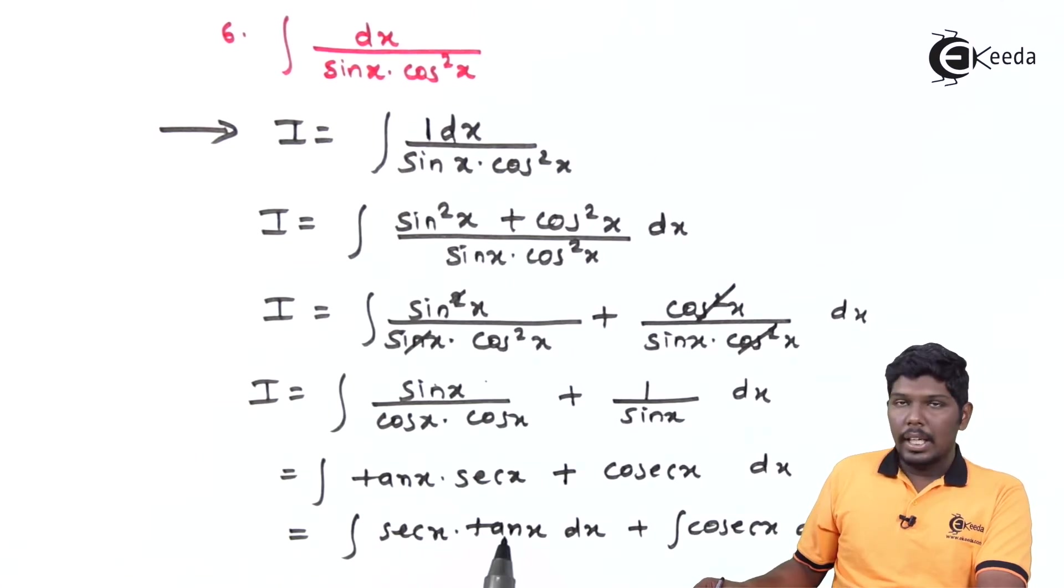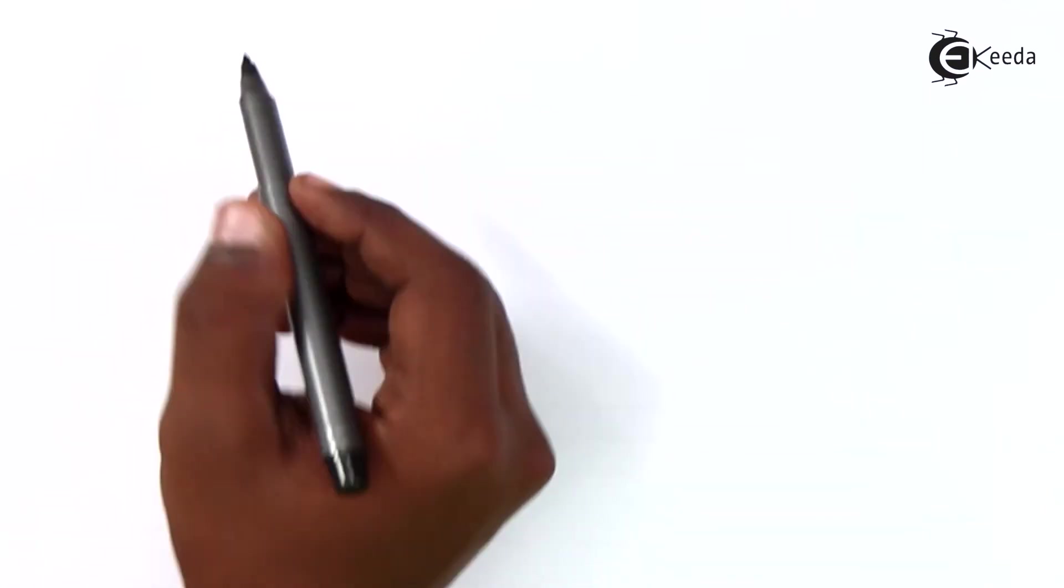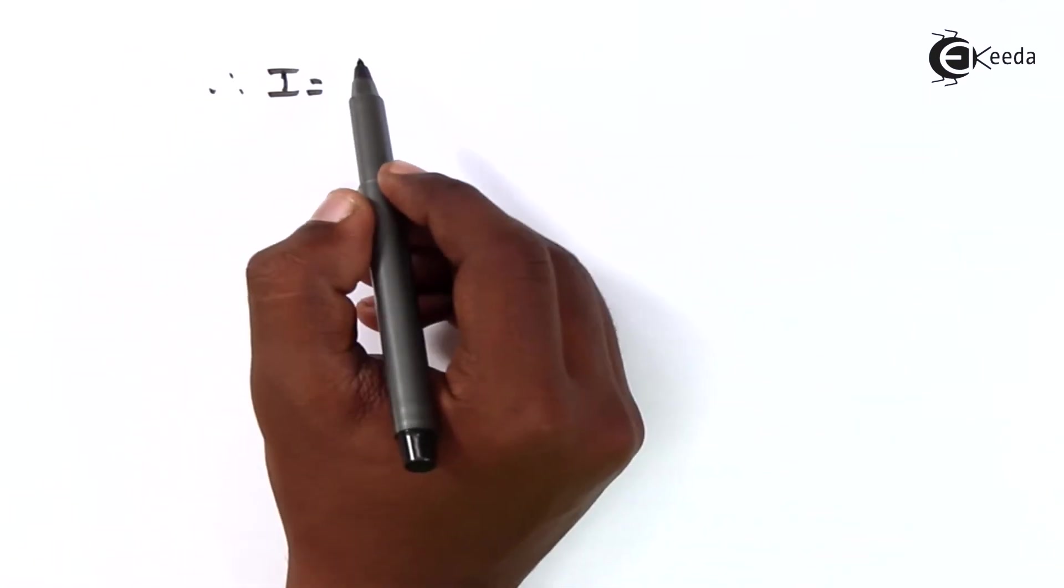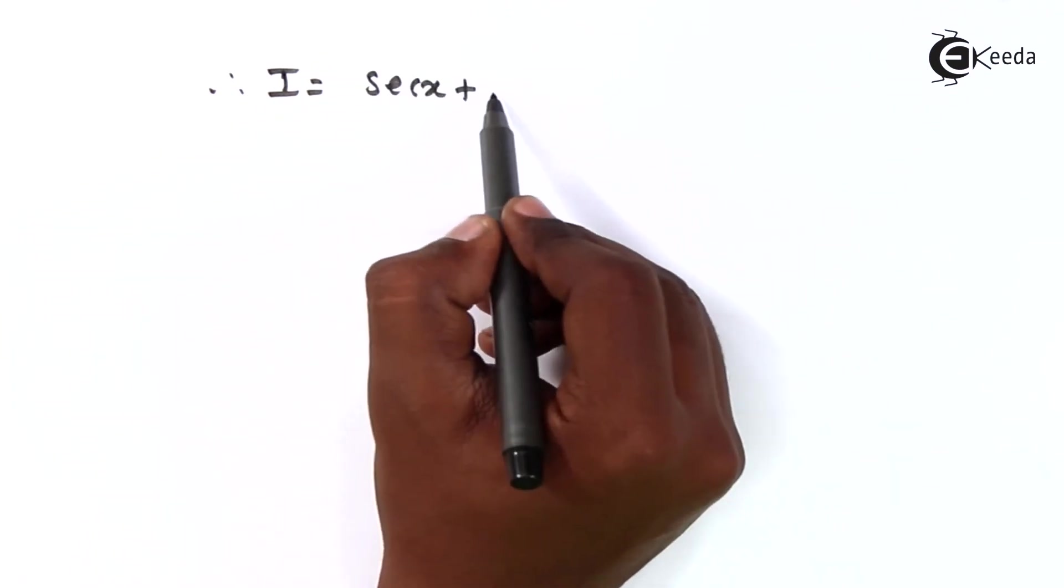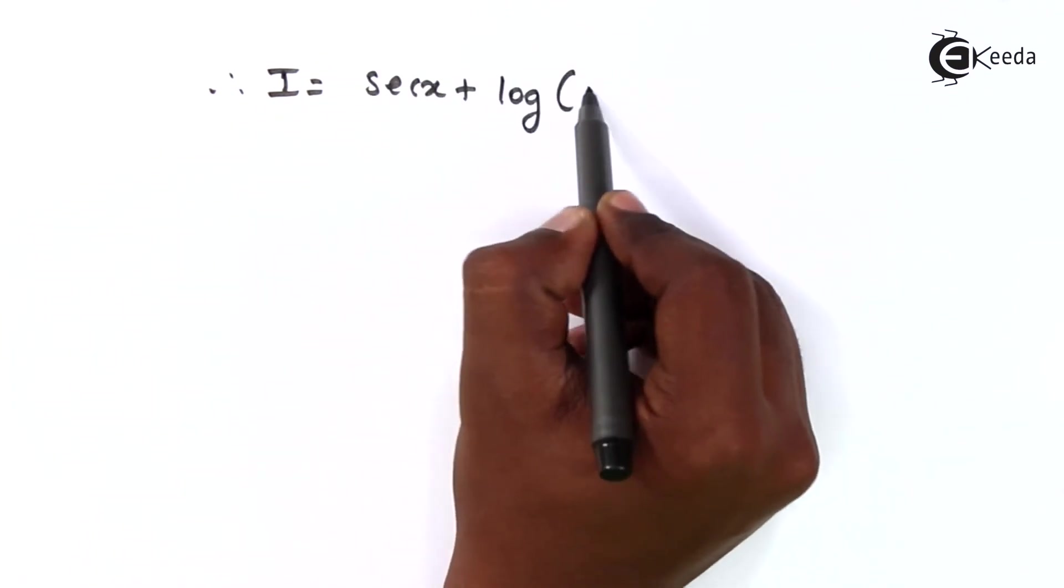Now, we know that integration of sec x tan x is sec x and integration of cosec x is log of cosec x minus cot x. Therefore, the final answer will be I is equal to sec x plus log of cosec x minus cot x plus c.